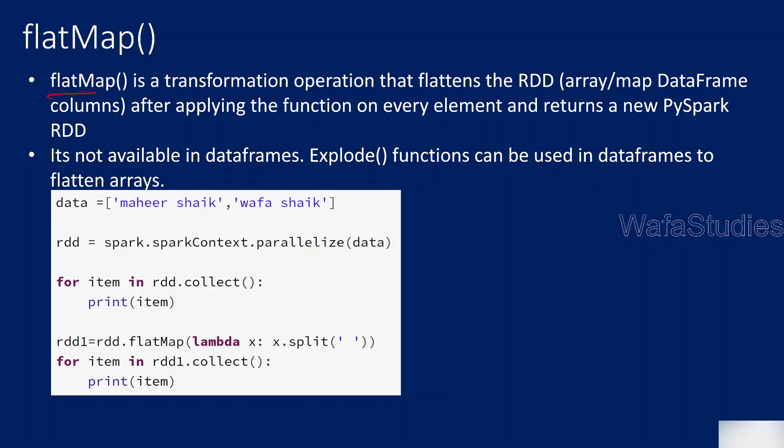The flatMap transformation actually allows you to flatten the list or array on top of the RDD objects. So you should know what is an RDD object. As I said in my previous videos, think of an RDD object like it is a list in Python. Please watch the video on RDD to get a better idea, but for now you can think of it as just like a list in Python.